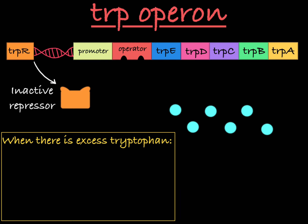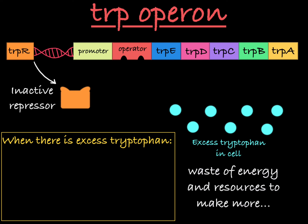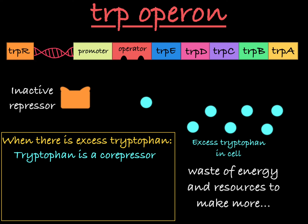When there's an excess of tryptophan in the environment or in the cell, it would be a waste of energy and resources for the cell to continue making tryptophan. So the transcription of the structural genes should be limited. It turns out that tryptophan is a co-repressor of the trp operon, because it works with the repressor to prevent transcription of the structural genes.